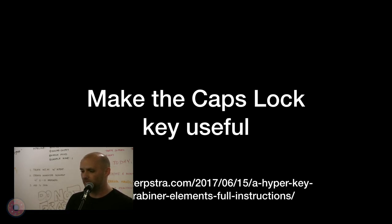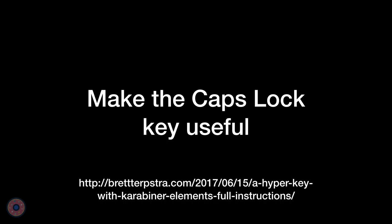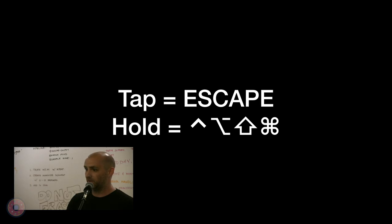Carabiner. I learned about Carabiner years ago when I read a blog post about the hyperkey. The hyperkey is a way to make your caps lock key useful. Using Carabiner, I can tap my caps lock key and it acts like escape — which is something you can actually do in Mac keyboard preferences. But the cool thing is, if I hold down caps lock and start to type other characters, it acts like I'm holding down all of the keyboard modifiers at the same time. I'll explain why that's cool in a minute.